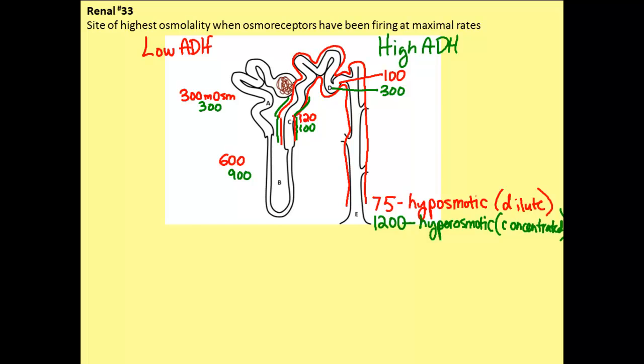So, I would suggest, first of all, you need to memorize these typical values as you go through the nephron, and I would highly suggest that you write these down each time you are trying to solve one of these problems. So, now that we have our background, we can start to talk about the situation that is given where we have osmoreceptors that are firing.